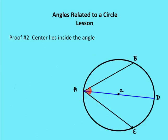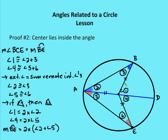Moving on to the second proof: when the center lies inside of the angle. I'm going to draw a diameter from A through C to D, and use the same concept from the prior proof — but twice. Angle one and angle four are two central angles: angle one equals the measure of arc BD and angle four equals the measure of arc DE.